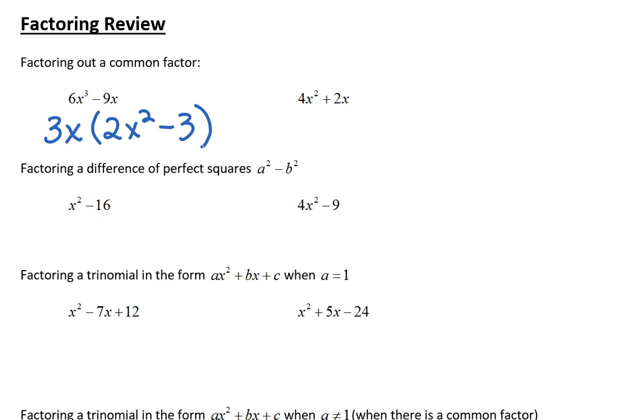On the next one we have 4x²+2x. They have a 2x in common, so we factor that out and we're left with 2x plus—and here you want to be careful—2x divided by 2x is going to be a positive 1. You don't want to leave that out.